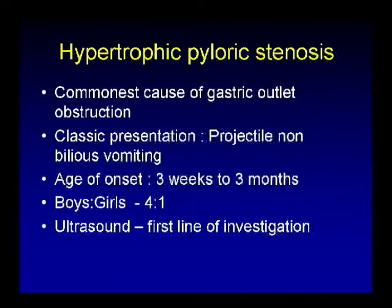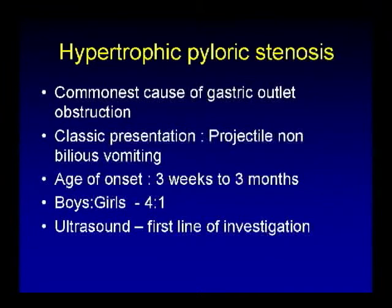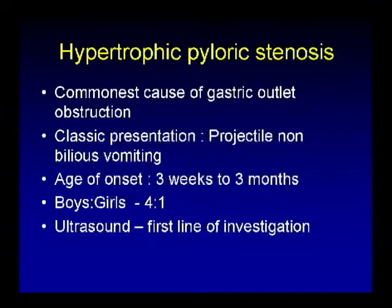Another common acute GI condition is hypertrophic pyloric stenosis. Unlike malrotation and volvulus, this is a very common cause of projectile non-bilious vomiting and the common cause of gastric outlet obstruction. The age of onset is after three weeks up to three months of age, though very rarely it can present earlier. Boys are affected more than girls, and imaging is typically plain film followed by ultrasound.